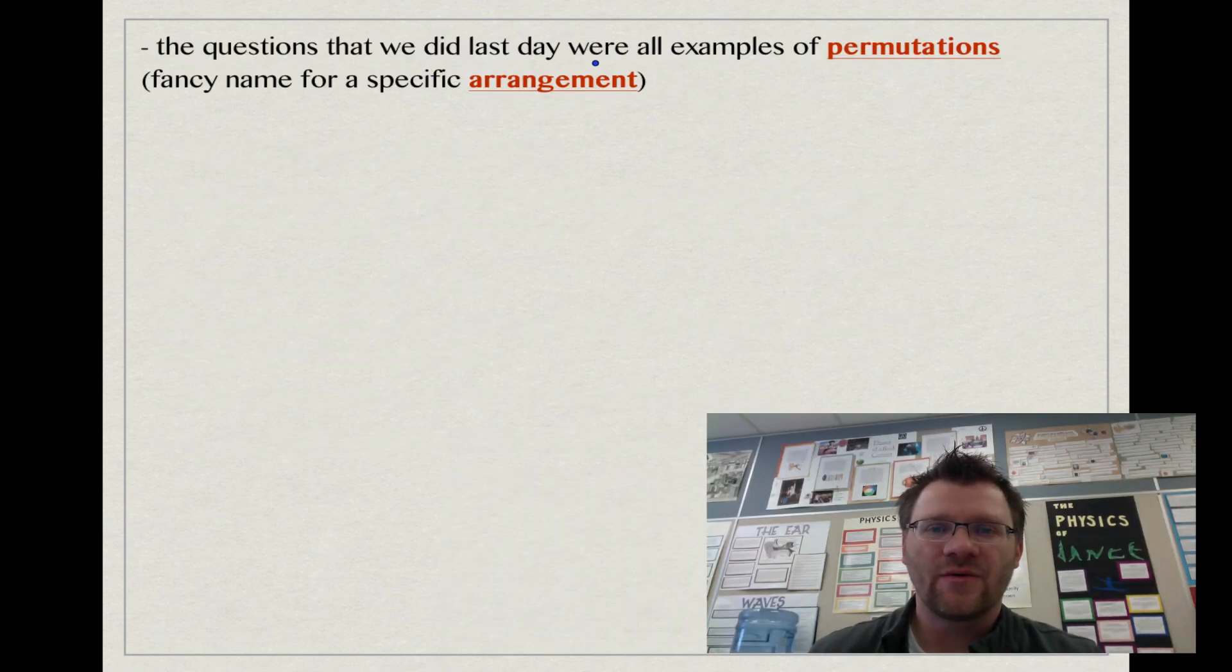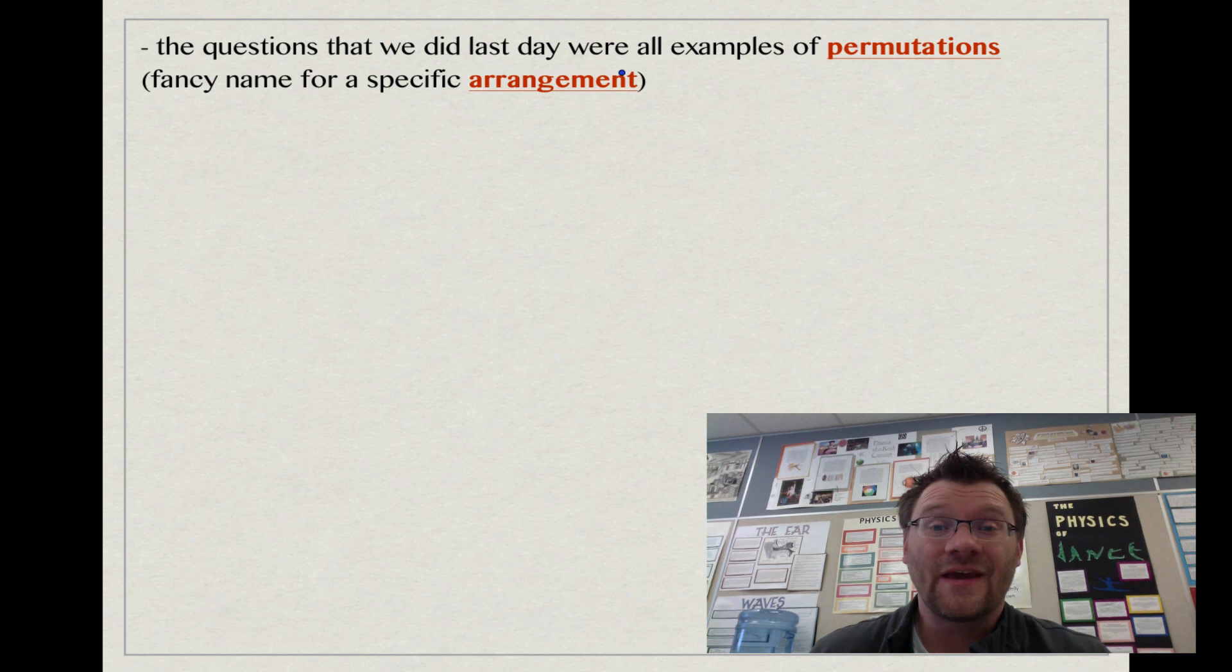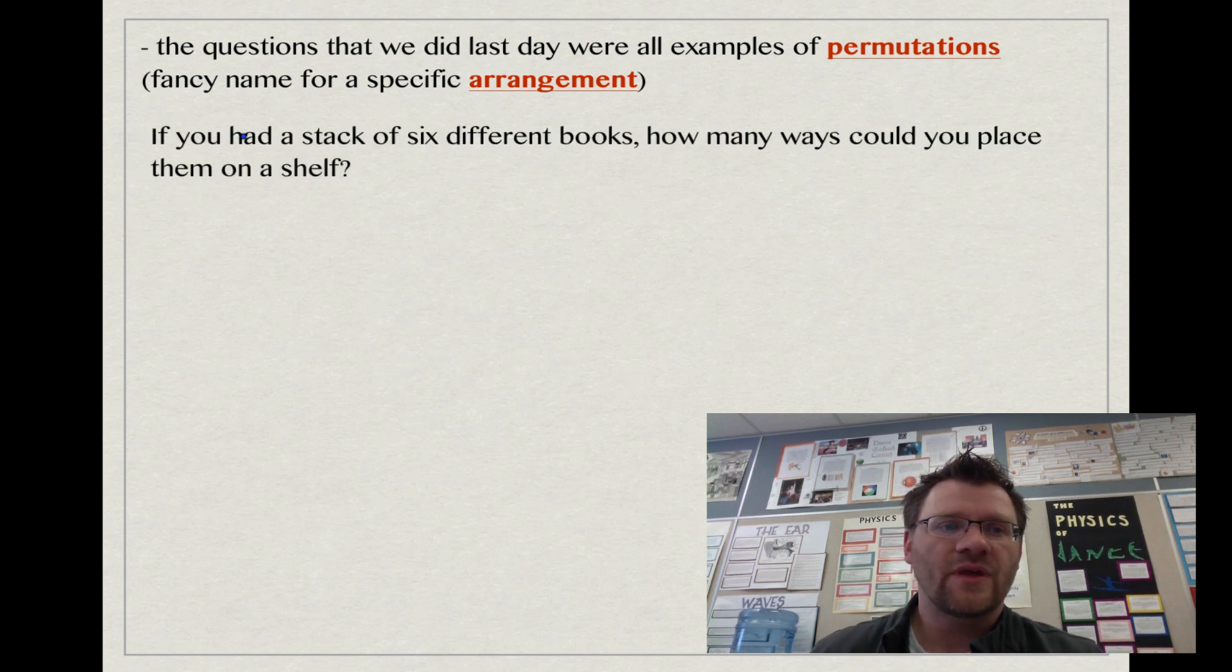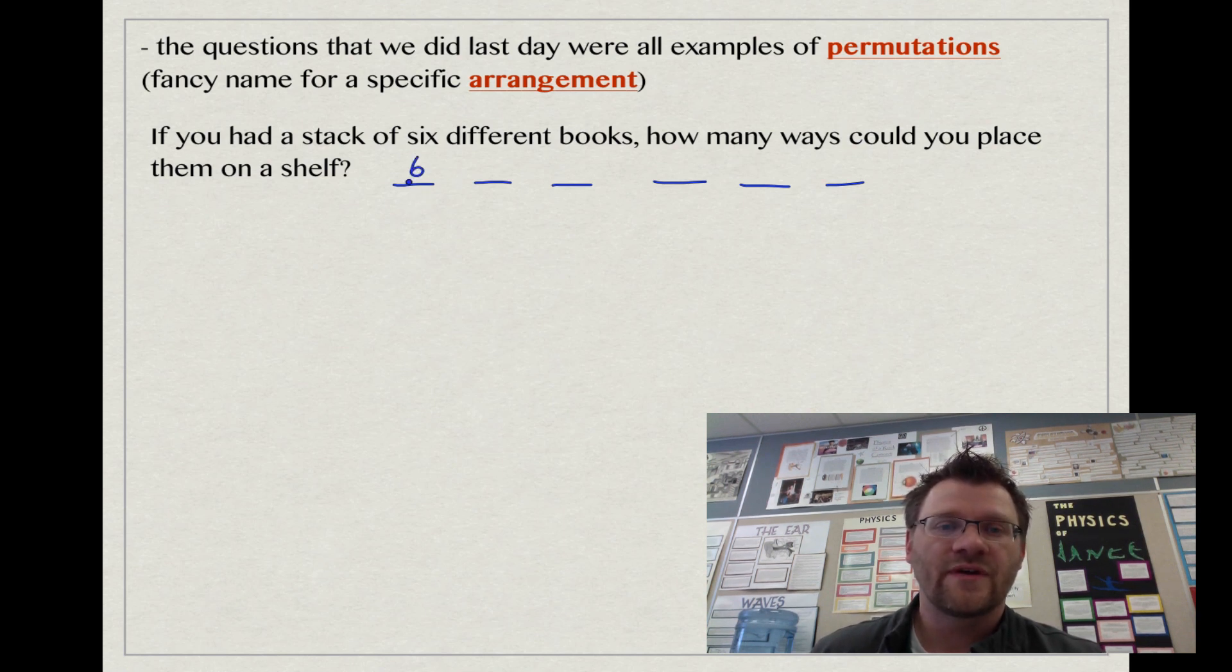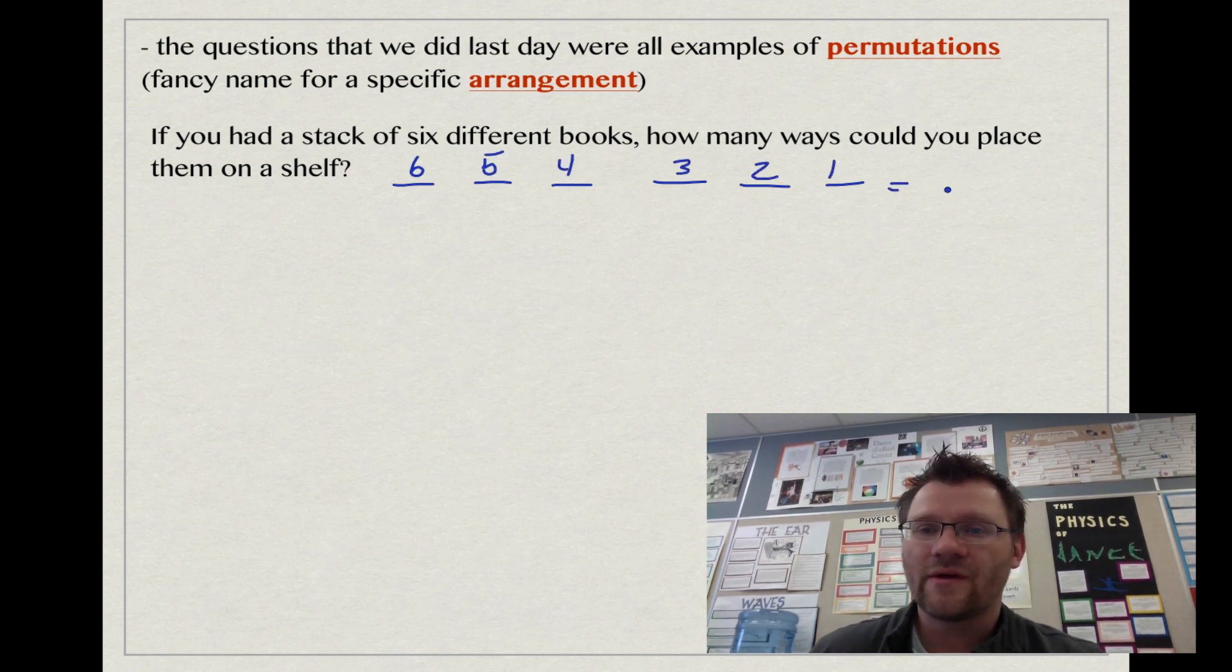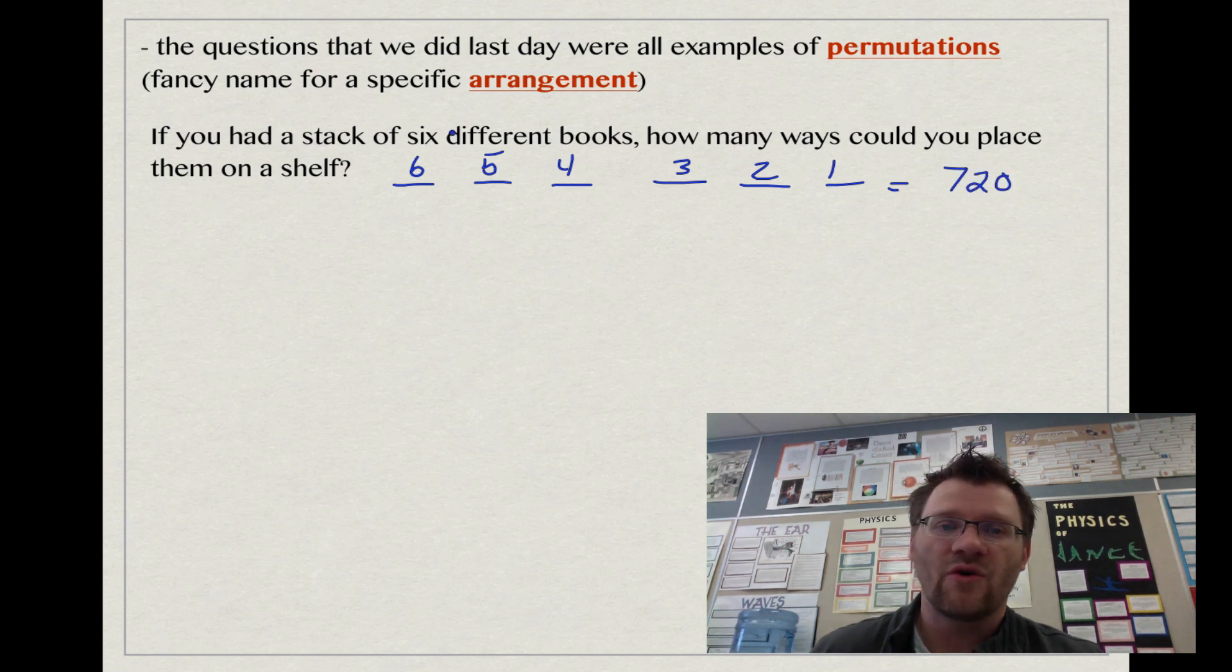The questions we did last day were all examples of what we call permutations. That's just a fancy name for a specific arrangement of things or objects. If you had a stack of six different books, how many ways could you place them on a shelf? We did a fill-in-the-blank approach to this question. You have six different books you could put first, then five, four, three, two, and one. That's 720 because we multiply all those things together.